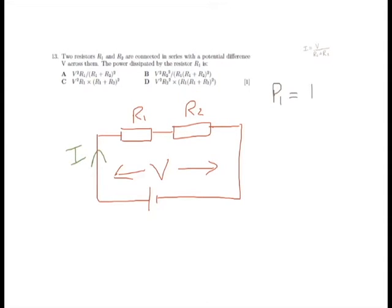To find the power, we can use the equation P equals I squared R. That's one of our standard power dissipation equations. And we're interested in the power dissipated across R1, so I squared R1.